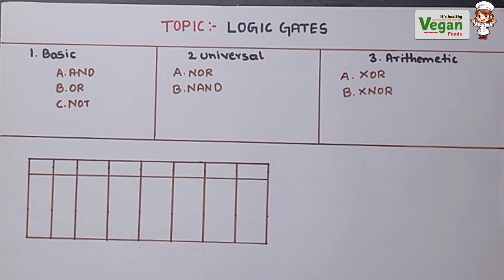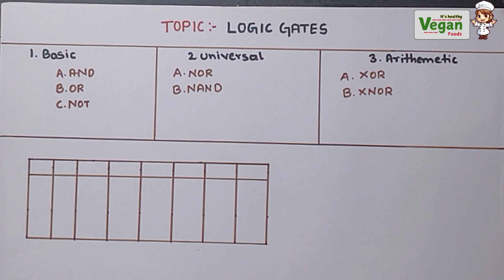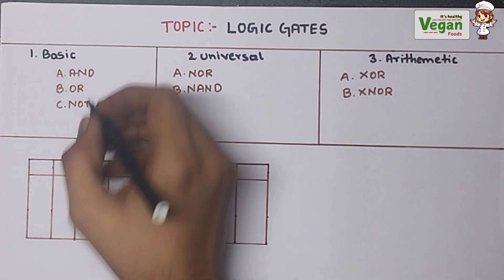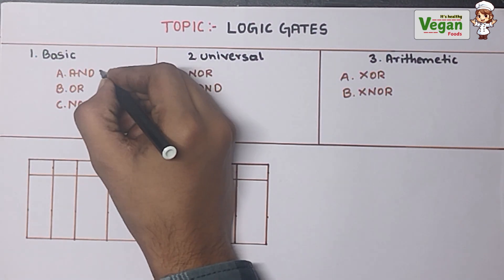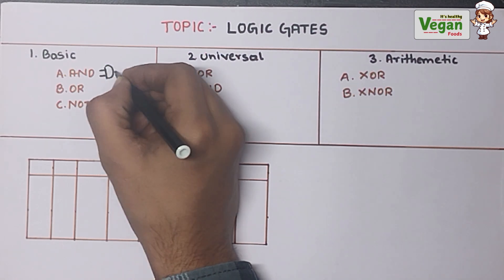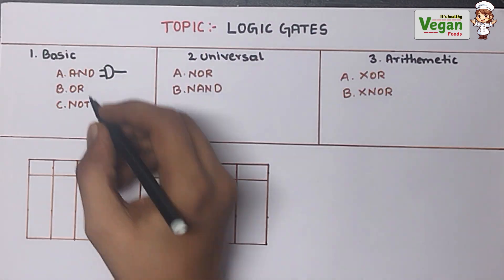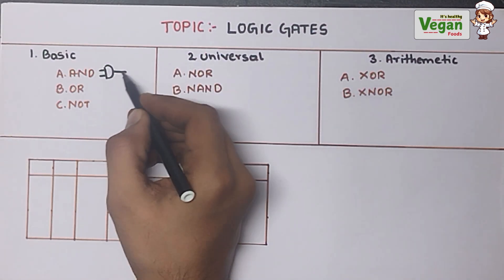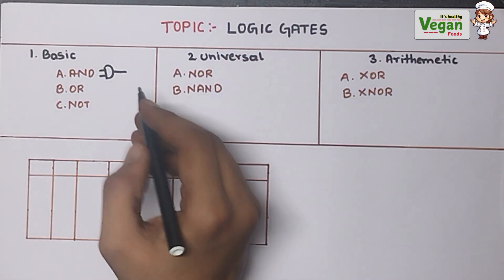Now let's study each one by one with their block diagram, formula, and truth table. For the AND gate, the block diagram is similar to a D shape, with two inputs and a single output.